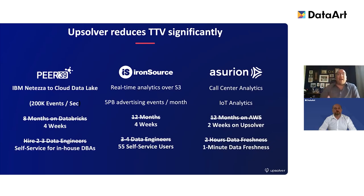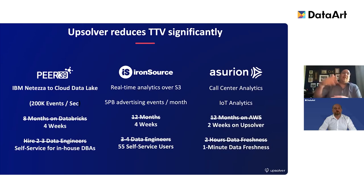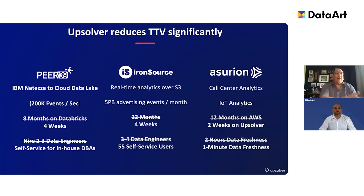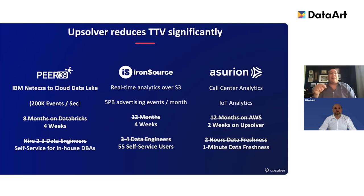One of the issues Asurion was having was getting real-time data freshness within 30 minutes — they just wanted a 30-minute delay from when data left the cell phone to hit the customer profile, so when a call center agent picked up, they could act on it. Well, that 30-minute target was blown out of the water. They actually have one-minute data freshness now. If someone calls one minute after an incident happened, the call center agent already has that information in front of them. Initially this project was going to take a year to deploy. It took them two weeks with one person, working approximately two hours a day over that 14-day period.